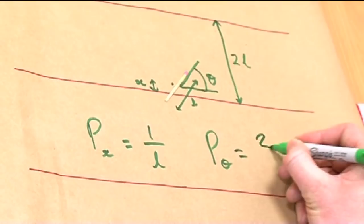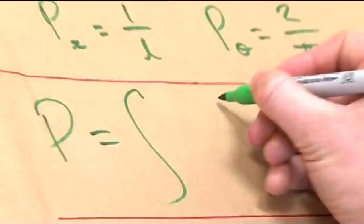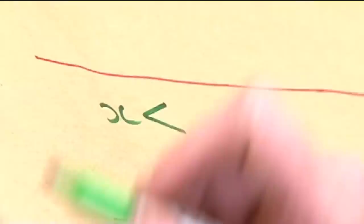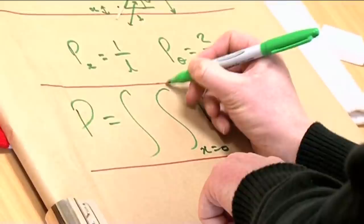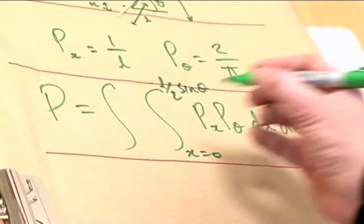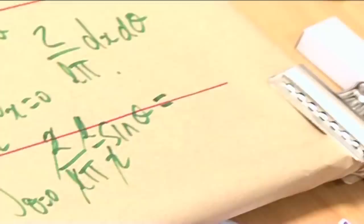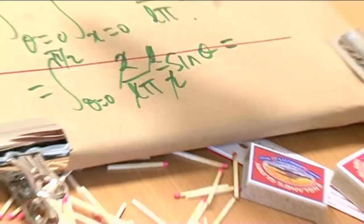If we want to work out essentially the probability of matches for the match to cross the line, what we do is we take these two. We have to do an integration. Now there's an important point here. What's the condition for the match to cross the line? The condition for the match to cross the line is that x should be less than L over 2 sin theta. So that means when we do the x integration, we go between 0 and L over 2 sin theta. And when we do the theta integration, we're going between 0 and pi by 2. When we do the x integration, we get an L over 2 sin theta. And then we integrate sin theta between 0 and pi by 2. That gives me 1. And I've got the 1 over pi there. So the answer is 1 over pi.